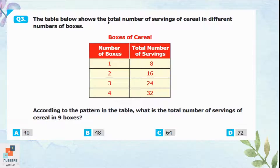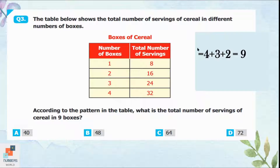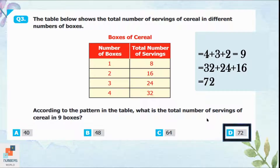Question 3: The table shows the total number of servings of cereal in different numbers of boxes. What is the total number of servings in 9 boxes? We need only 9 boxes, so we add the quantities for 4, 3, and 2 boxes — their sum equals 9. Then we add the total servings: 32 plus 24 plus 16 equals 72. So option D is correct — there are 72 servings of cereal in 9 boxes.